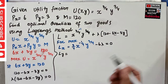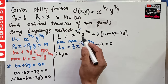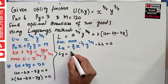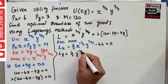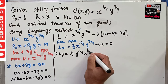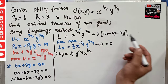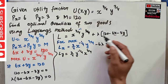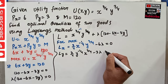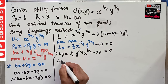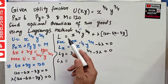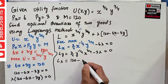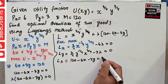Taking the partial derivative with respect to y: the exponent of y becomes the coefficient, giving (3/4) * y^(-1/4) * x^(3/4), and from the lambda term we get -3*lambda. Setting equal to zero gives equation two. Finally, the partial derivative with respect to lambda gives 120 - 6x - 3y = 0, which is equation three — the budget constraint.